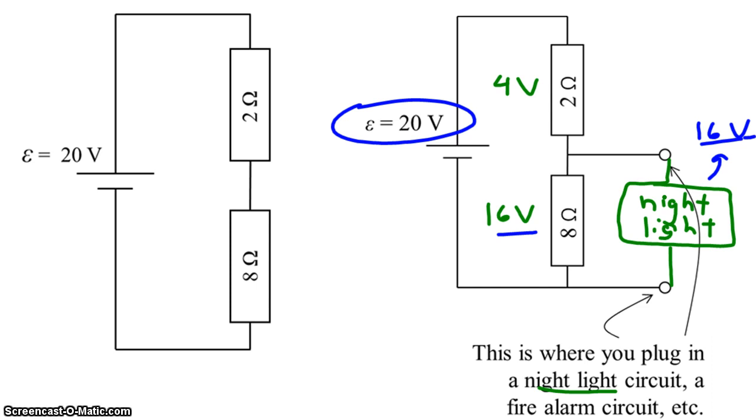So in effect, what we're doing is we're saying, okay, nightlight, by connecting you to the circuit, you are going to get some, but not all, you'll get some portion of the 20 volts supplied by the battery. Okay. That's the idea. It may not make much sense right now. You're probably wondering, this is so silly. Why would we ever connect the nightlight to a circuit like this? Why wouldn't we just connect the nightlight to the 20 volts?